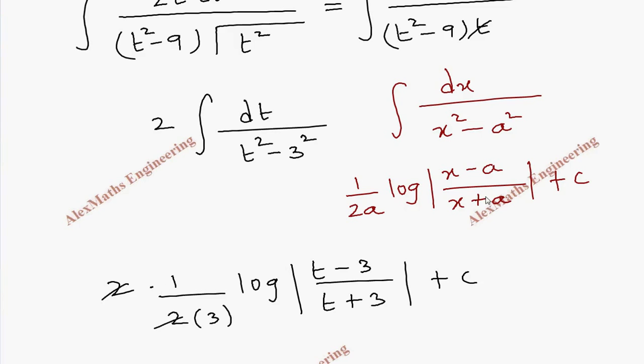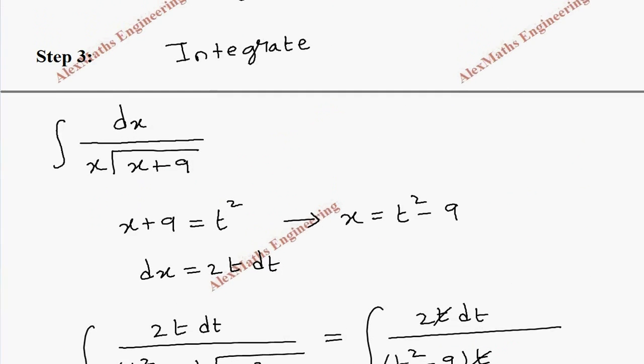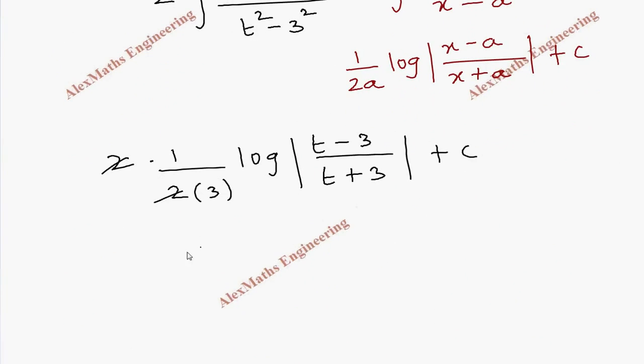We are going to replace t. t from here is root x plus 9. So, this will be 1 by 3 log mod (root x plus 9 minus 3) divided by (root x plus 9 plus 3), then plus c.